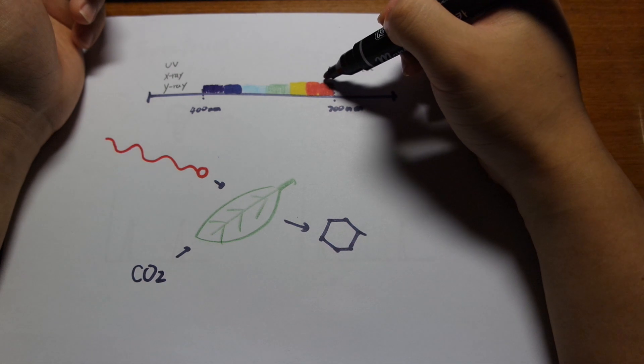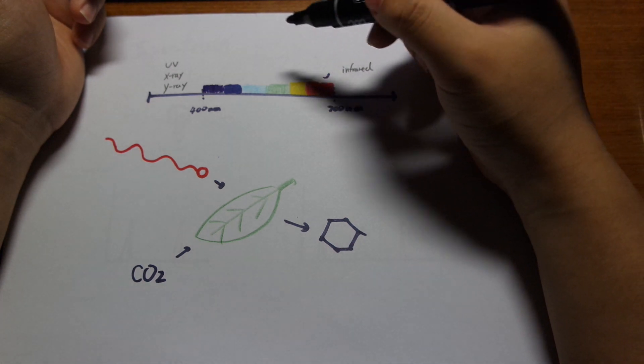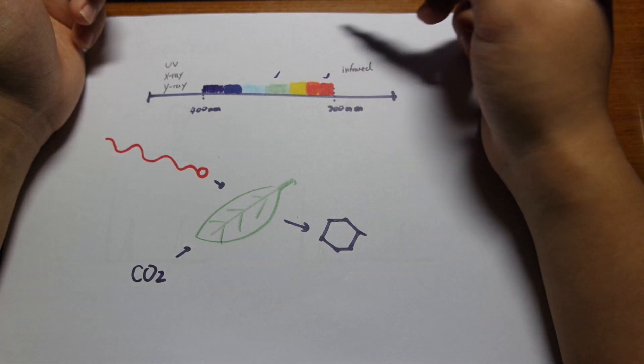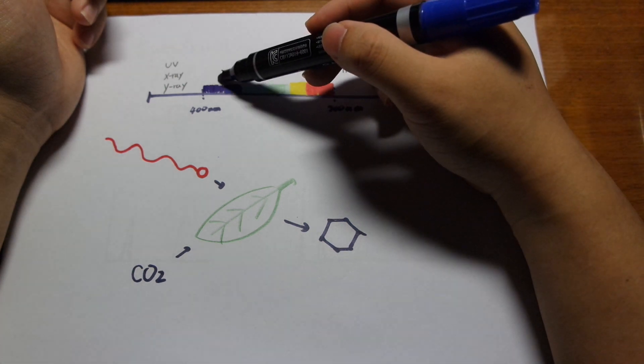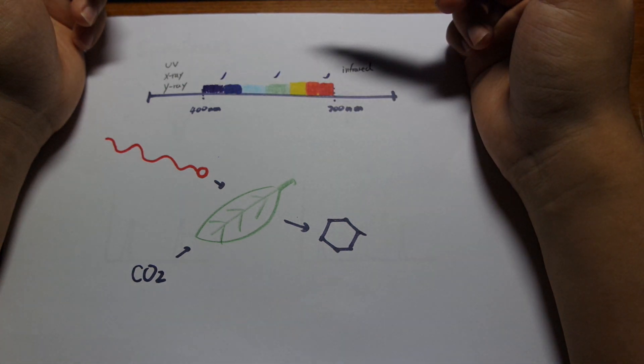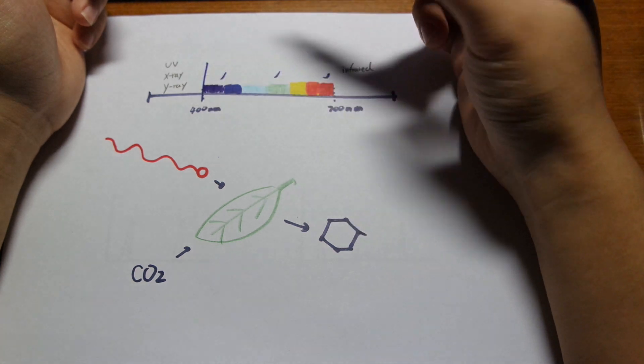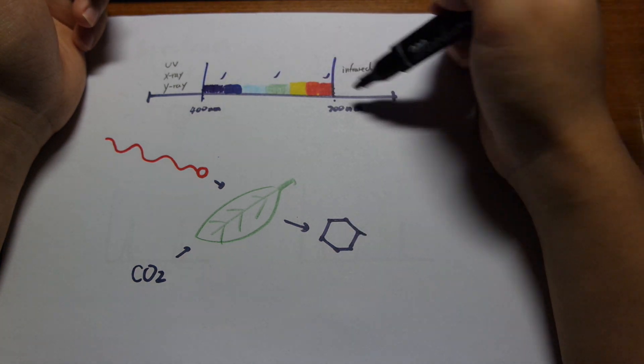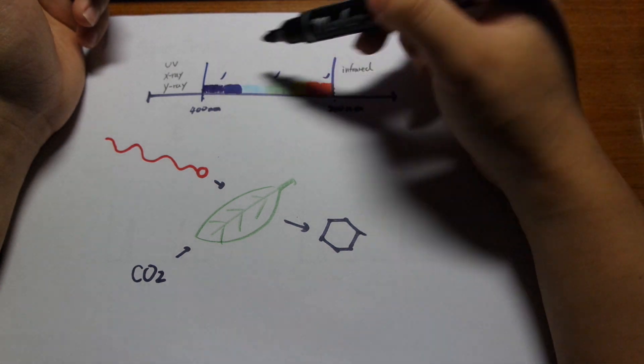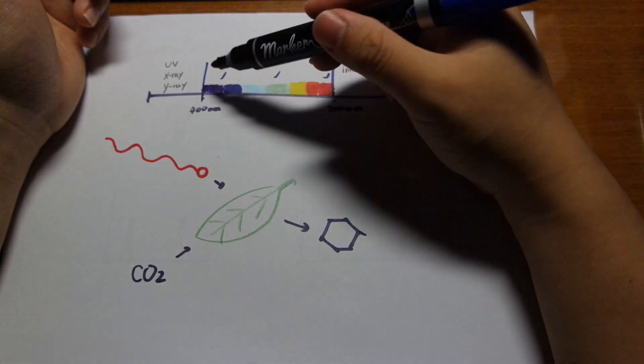So humans see short wavelength light around the 700, 600 nanometer length as red. And then something intermediate, we see it as green. And some of the short wavelength, we see it as blue and purple. And beyond the purple, you get UV, X-rays, gamma rays. And beyond red, you have infrared, radio, and such.